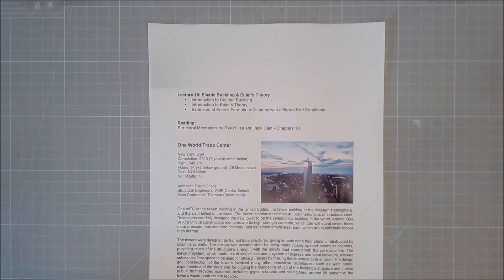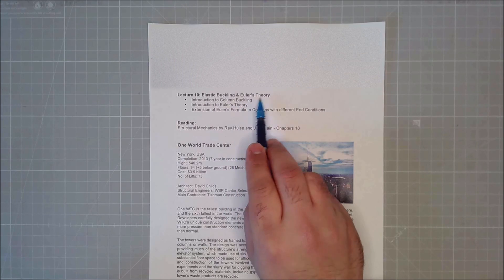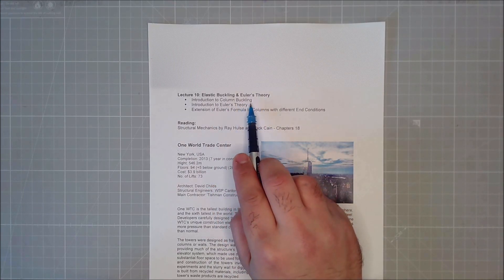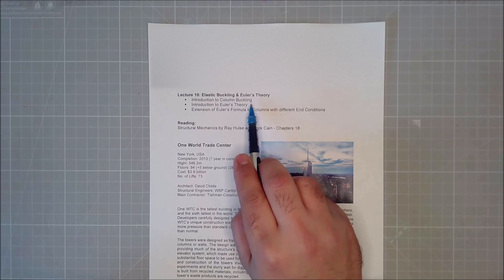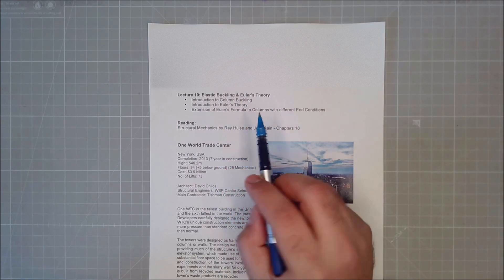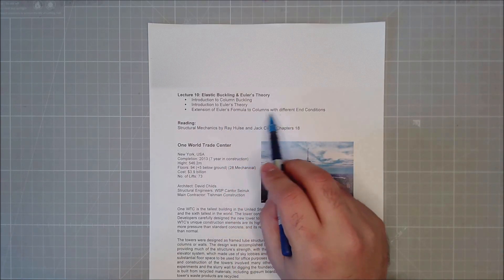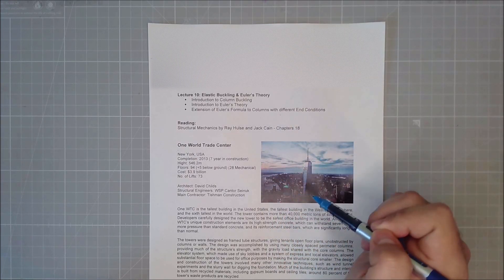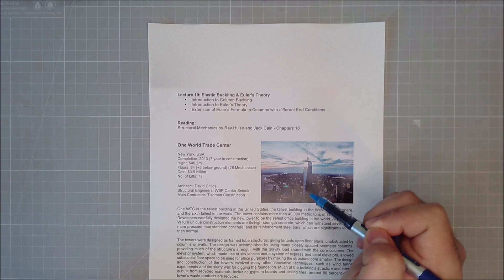Hello, ladies and gentlemen, and welcome to lecture 10 of CG0101 Structural Mechanics. I'm Arash, and today we're going to talk about elastic buckling and Euler's theory. We're going to have a look at how columns buckle, then we will see how we can calculate that buckling load, and then we will extend that theory to other column conditions. There is no problem worksheet for this lecture, so it's a fairly short lecture as well.